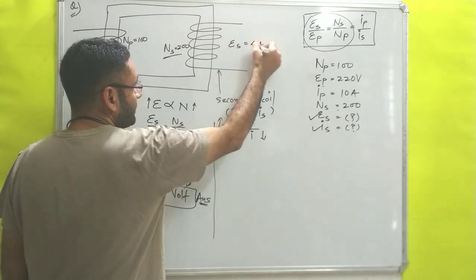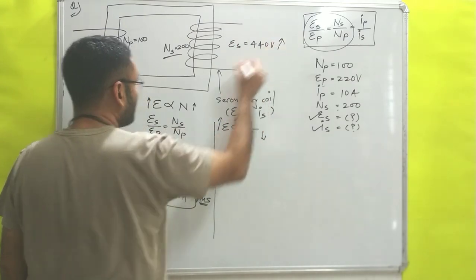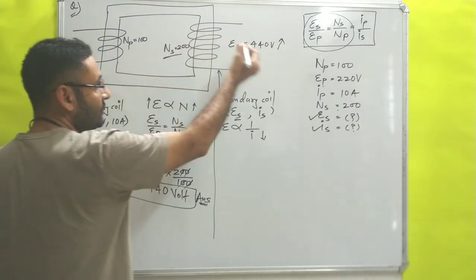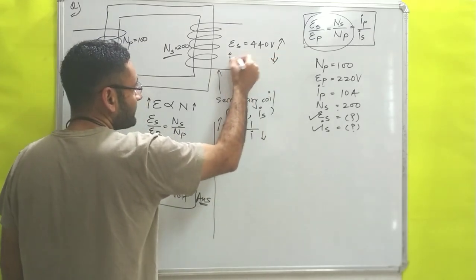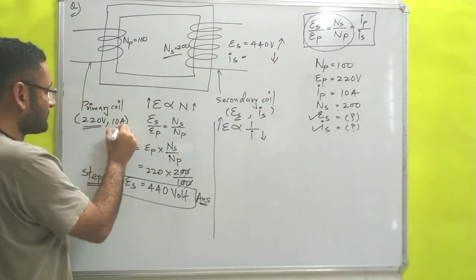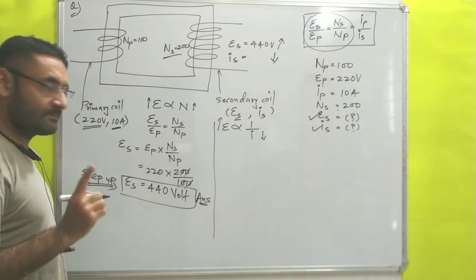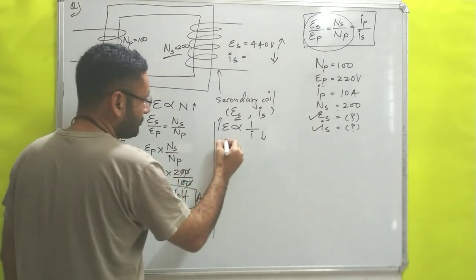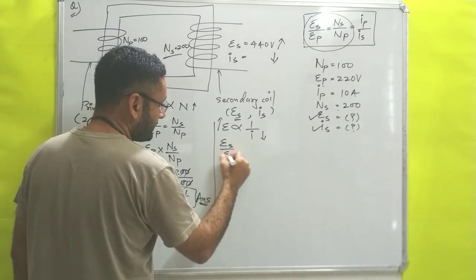On the secondary side, EMF is 440 volts. EMF has increased from 220 to 440, so the current must be decreased — the answer for current must be less than 10 amperes. Let us verify.